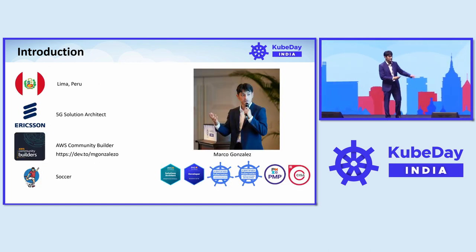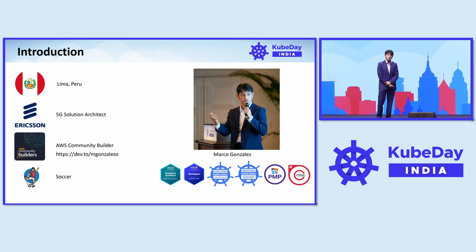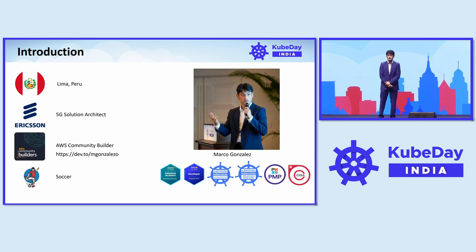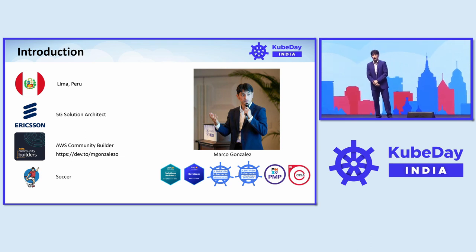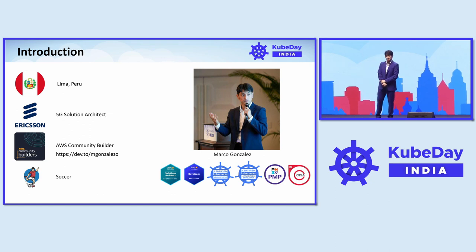About me, my name's Marco Gonzalez. I'm from Lima, Peru, South America. I've been working in telecom for over 14 years now. And now I work as a 5G solution architect at Ericsson, Japan. In my free time, as an AWS community builder, I talk about AWS, 5G, and a mix of both. You can check out my blog. I also love soccer. That's enough for introduction — let's jump into the good stuff.